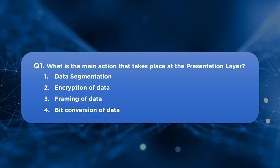Let's take a question about the OSI model layers. The question is: what is the main action that takes place at the Presentation layer? The options are: first option, data segmentation; second option, encryption of data; third option, framing of data; and fourth option, bit conversion of data. You can provide your answers in the comment section below.